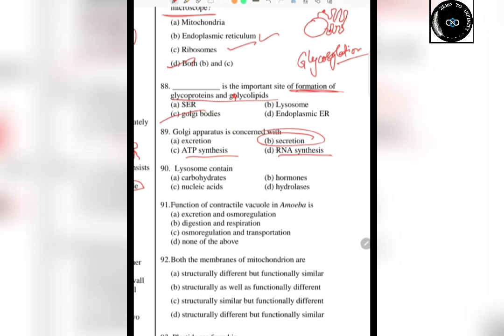The next question is: what do lysosomes contain? Lysosomes are famous as suicidal bags because they contain acidic hydrolytic enzymes. These enzymes help finish cell debris, and when secretion is excessive, lysosomes destroy the cell itself — hence the name suicidal bags.